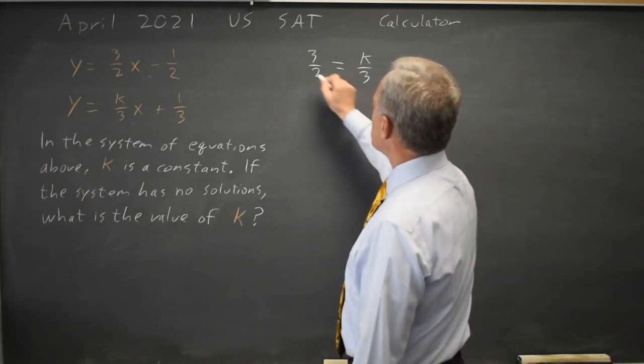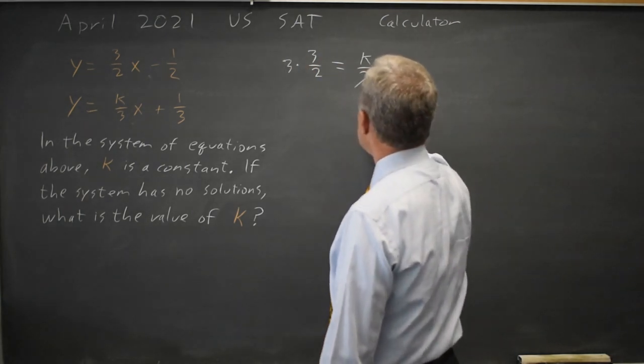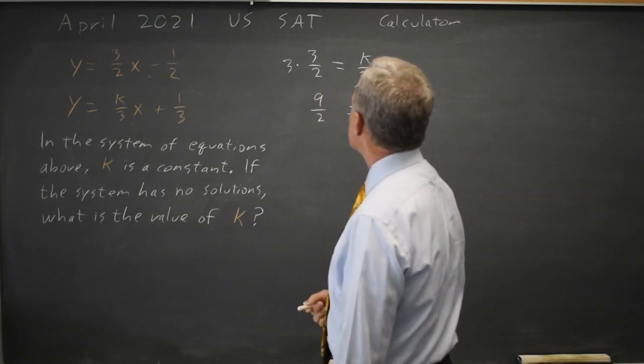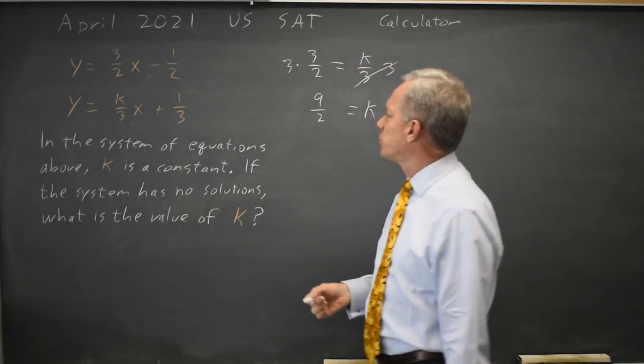If I multiply both sides by 3, 3 over 3 is 1, so I get k equals 3 times 3 halves, which is 9 halves. K equals 9 halves or 4.5.